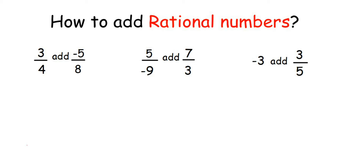Hello everyone. In this video I am going to explain how to add rational numbers when denominators are not same. There are two scenarios: when denominators are same and when they are not. When they are same it is very simple — you just keep the denominator same and add the numerators. But here I have taken three examples where denominators are not same. So what shall we do? How to add them?